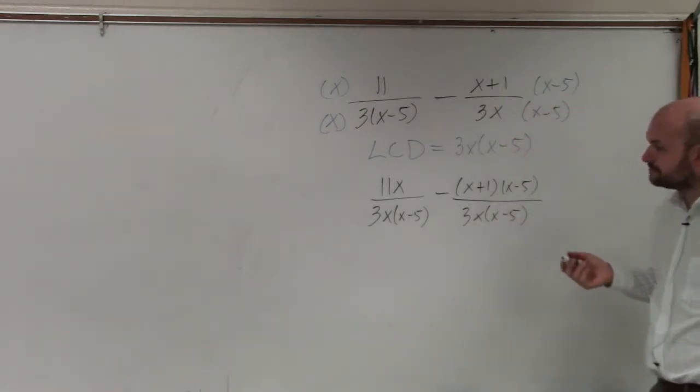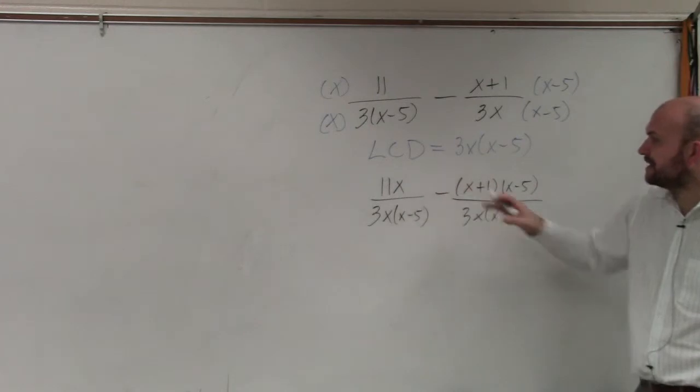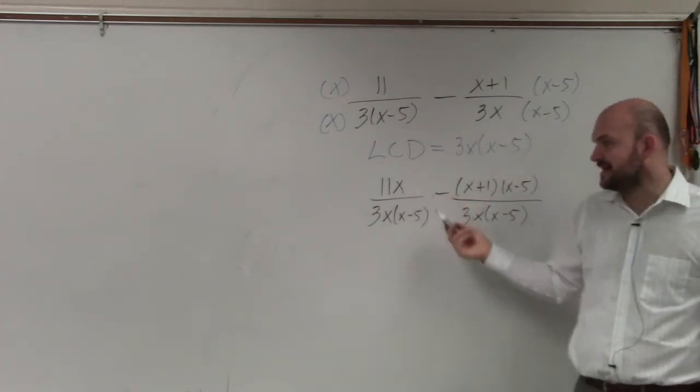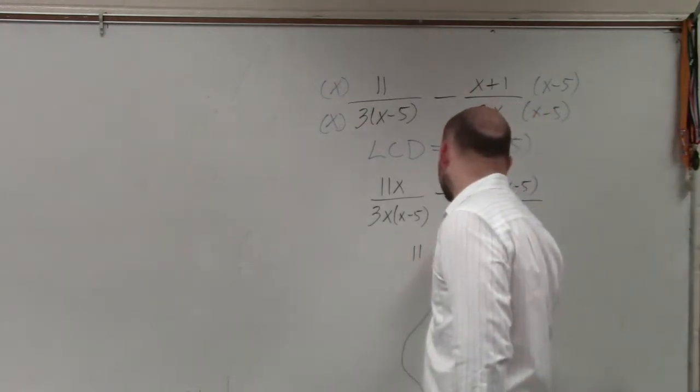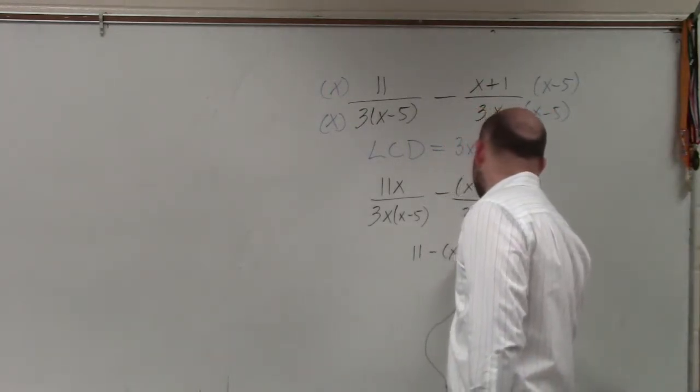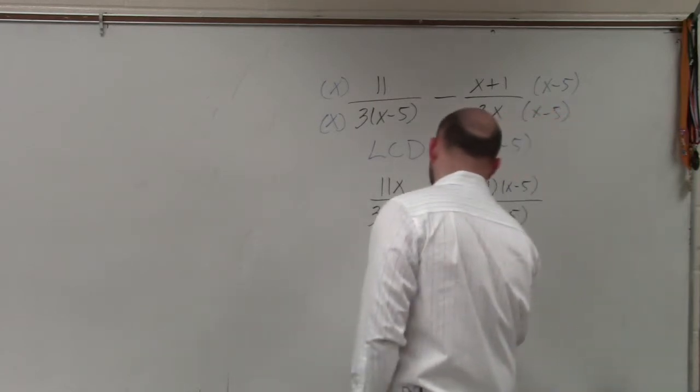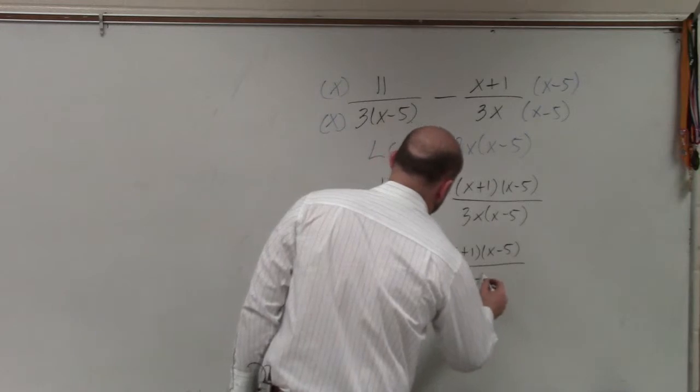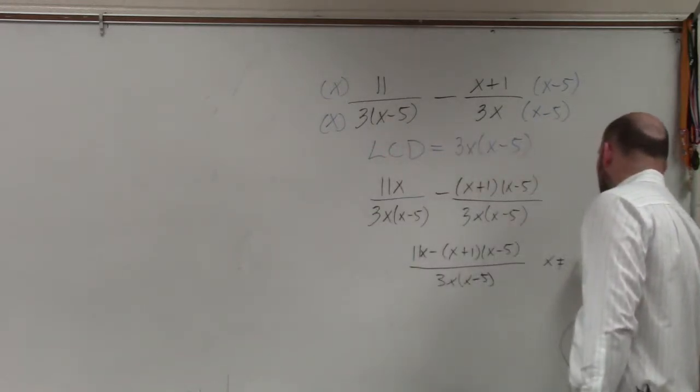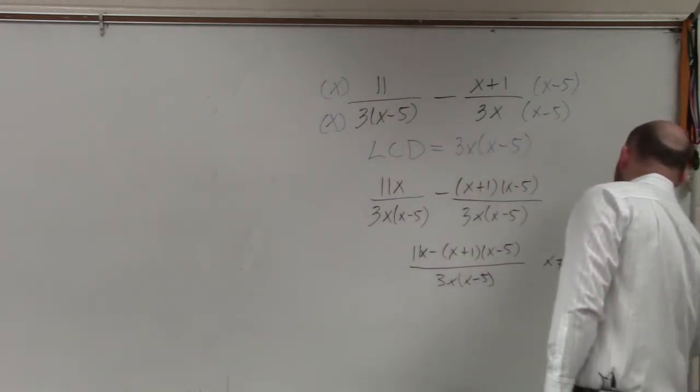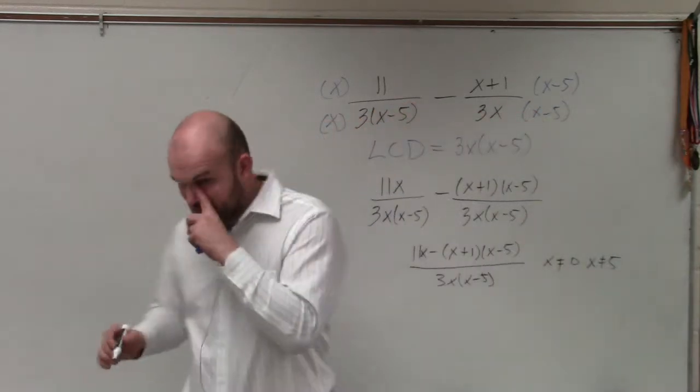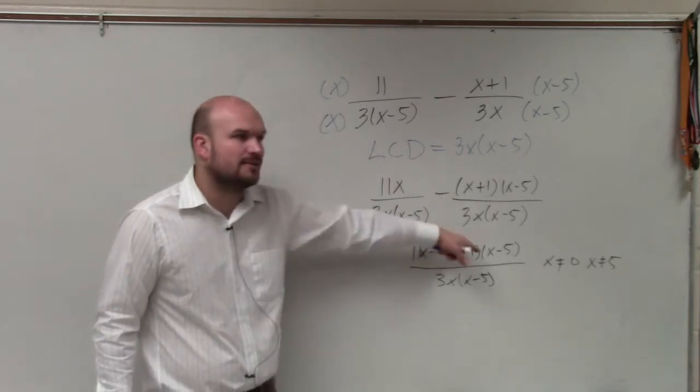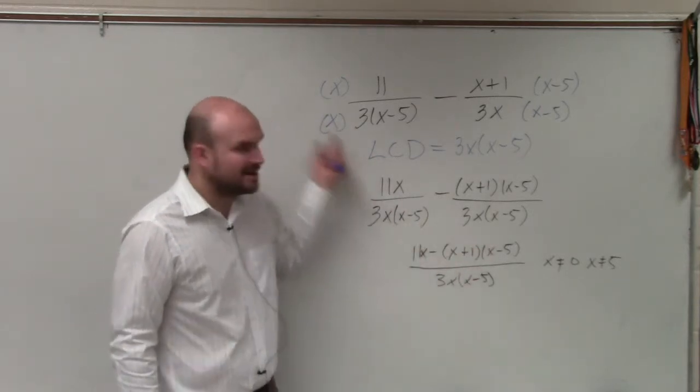Now we can go ahead and, now obviously, we can distribute this. Or if we were going to go ahead and distribute this, we could see that our final answer would be basically 11x minus x plus 1 times x minus 5, or 11x, divided by 3 times x times x minus 5, where we know that x cannot equal 0 and x cannot equal 5. However, ladies and gentlemen, I will tell you that when you have something that's multiplication and you have subtraction, they're probably going to want to have a simplified answer here. So I'm actually going to do that over here.